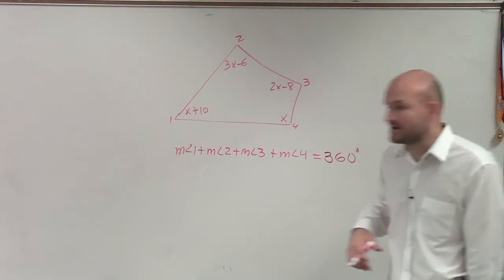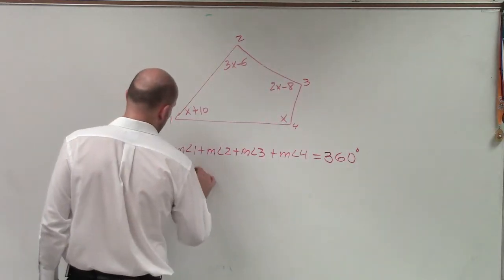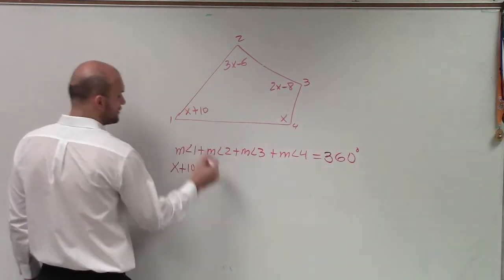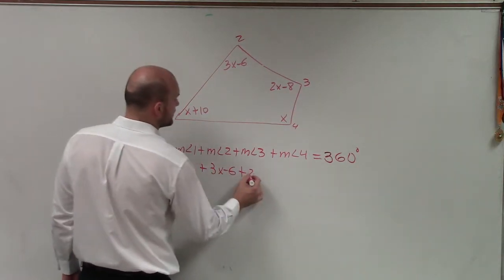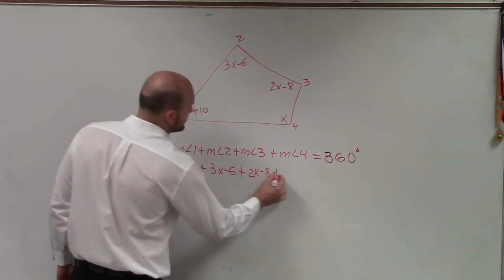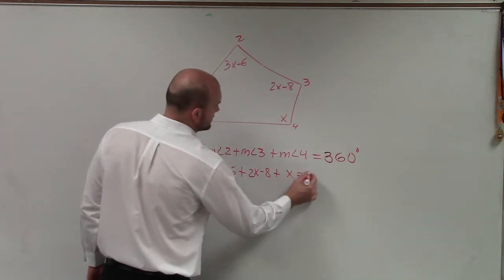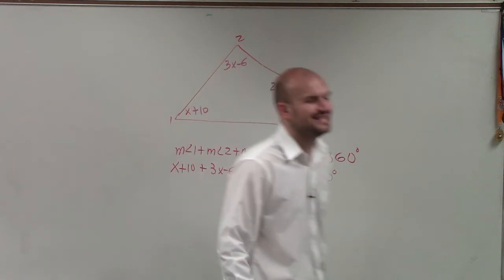So what is the measure of angle one? Well, that is just x plus 10, plus measure of angle two, 3x minus 6, plus measure of angle three, 2x minus 8, plus measure of angle four, is x equals 360. Does everybody see that?